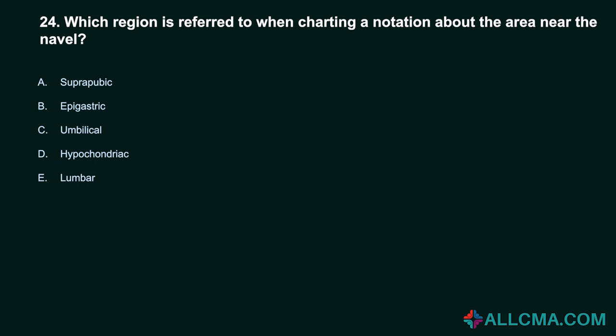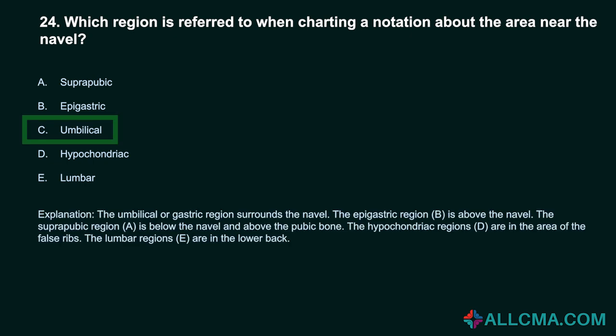Question 24: Which region is referred to when charting a notation about the area near the navel? A. Suprapubic. B. Epigastric. C. Umbilical. D. Hypochondriac. E. Lumbar. Correct answer: C. Umbilical. The umbilical region surrounds the navel. The epigastric region is above the navel. The suprapubic region is below the navel and above the pubic bone. The hypochondriac regions are in the area of the false ribs. The lumbar regions are in the lower back.